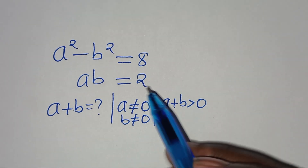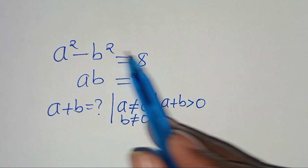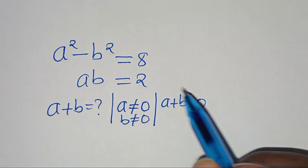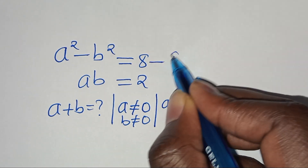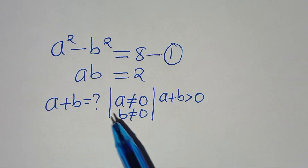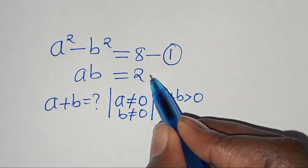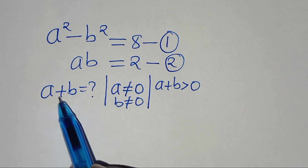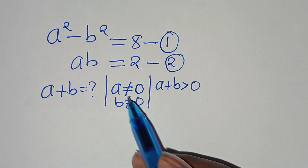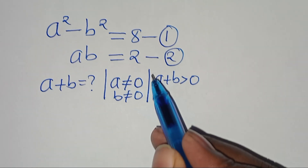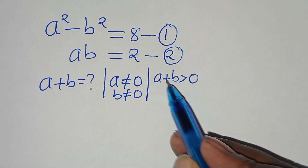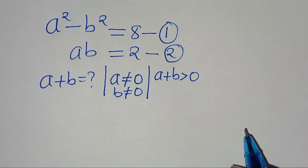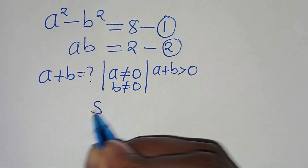Hello everyone, welcome to solve this nice algebra problem. We have a squared minus b squared equals 8 — let's call this equation 1 — and a times b equals 2 — let's call this equation 2. What is the value of a plus b, given that a is not equal to 0, b is not equal to 0, and that a plus b is greater than 0? So let's work out a solution from here.